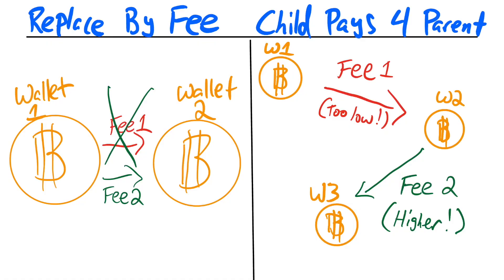There are actually two ways in Bitcoin to bump your fee. The first one is called Replace By Fee, and the second one is called Child Pays For Parent. In this video, I'm doing a Child Pays For Parent tutorial where I send Bitcoin with a really low fee from my Ledger Nano X to my ColdCard Mark 4, and then without that Bitcoin ever being confirmed, I send it from the ColdCard to a Blue Wallet on my iPhone with a higher fee threshold.